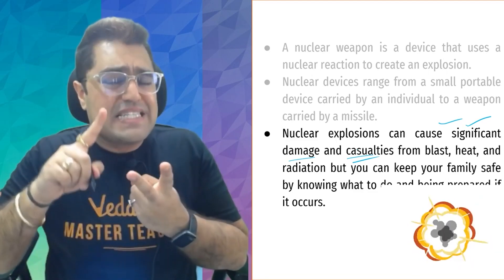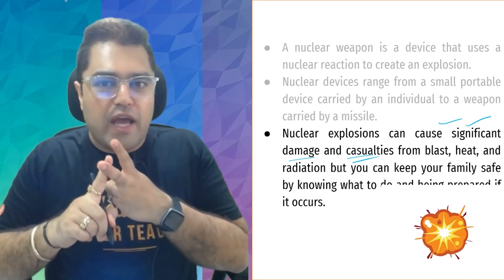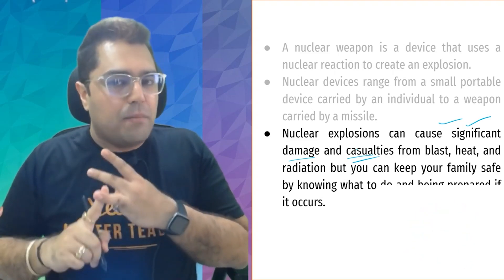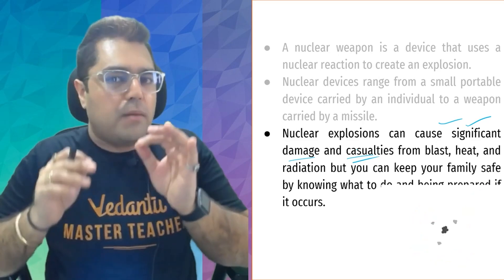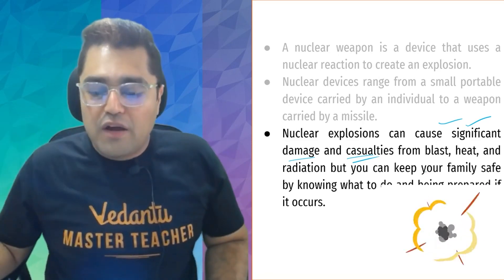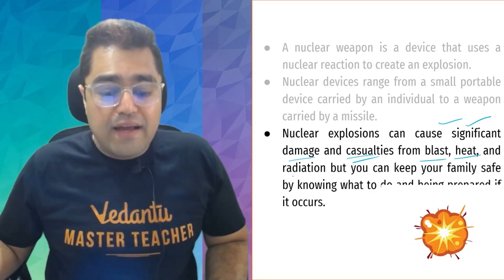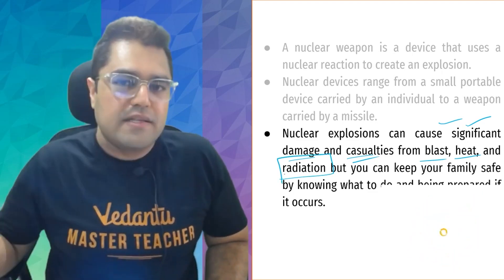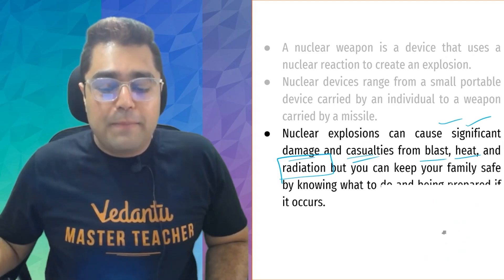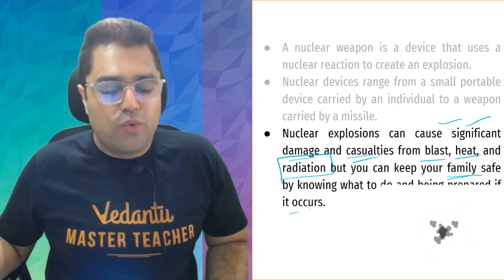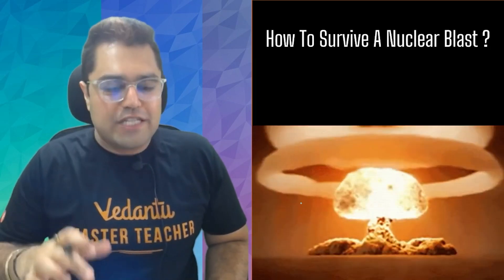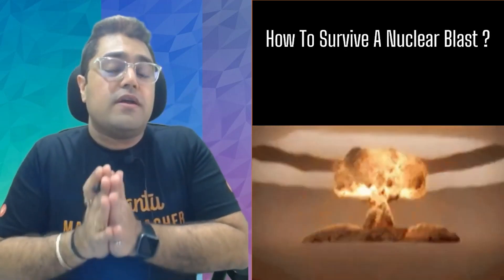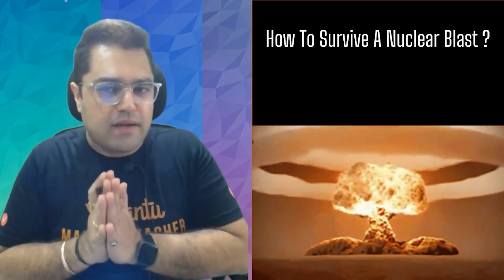Nuclear technology is the most hazardous — matlab agar galat use hui na, sabse zyada damage hoga from blast, from heat, and from radiation. Radiation ka effect sabse zyada hoga. But can you keep your family safe beta, by knowing how it occurs? Is video mein hum yeh jaanne wale hain ki kal ko, God forbid, nuclear attack hua, toh aapko kya karna hai.